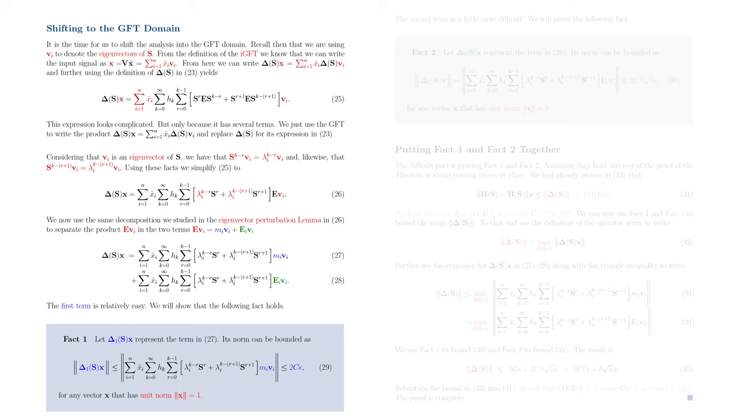Its norm can be bounded by 2 times c times epsilon, as we show in equation 29. This bound holds for any vector X that has unit norm.